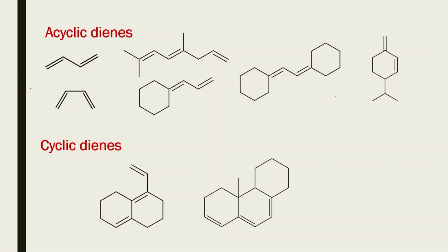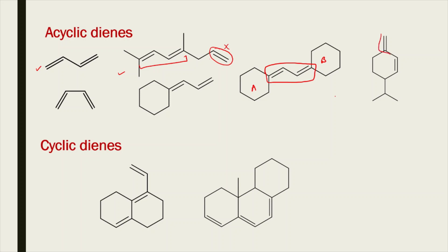These are some examples of acyclic dienes. One molecule is clearly an acyclic diene, and another is also an acyclic diene. Note that if a double bond is not conjugated to the other two double bonds, it is not part of the conjugation and we will not consider it as part of the conjugated system. Although rings may be present in the molecule, if the conjugated system itself is acyclic, it is considered an acyclic diene.